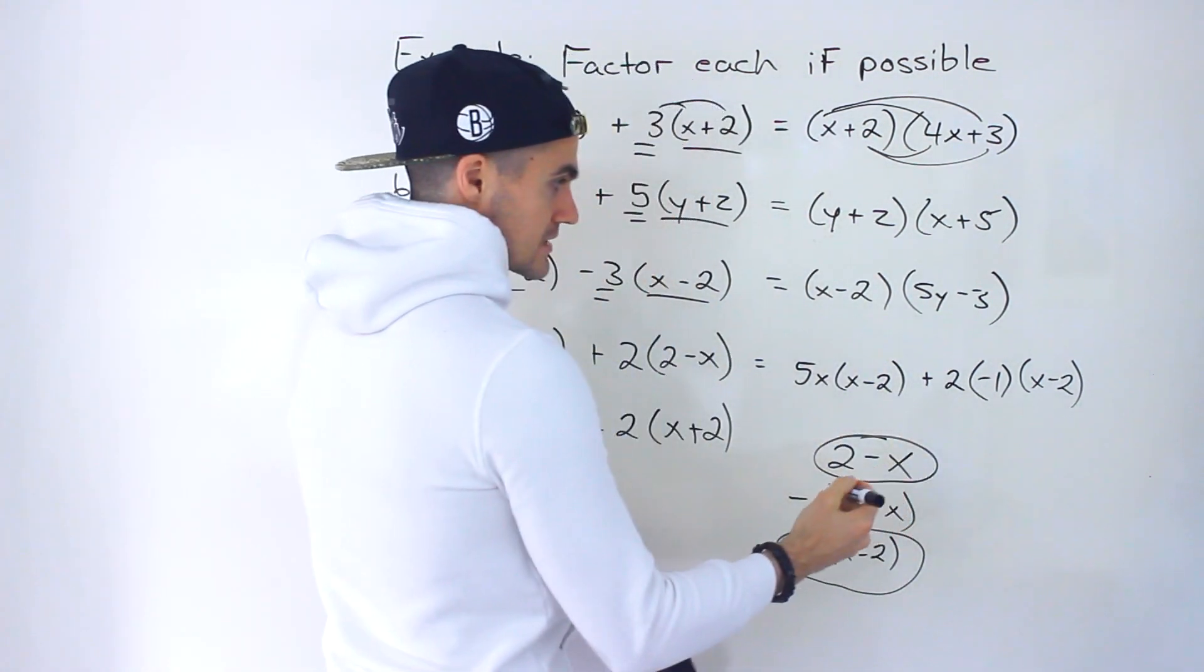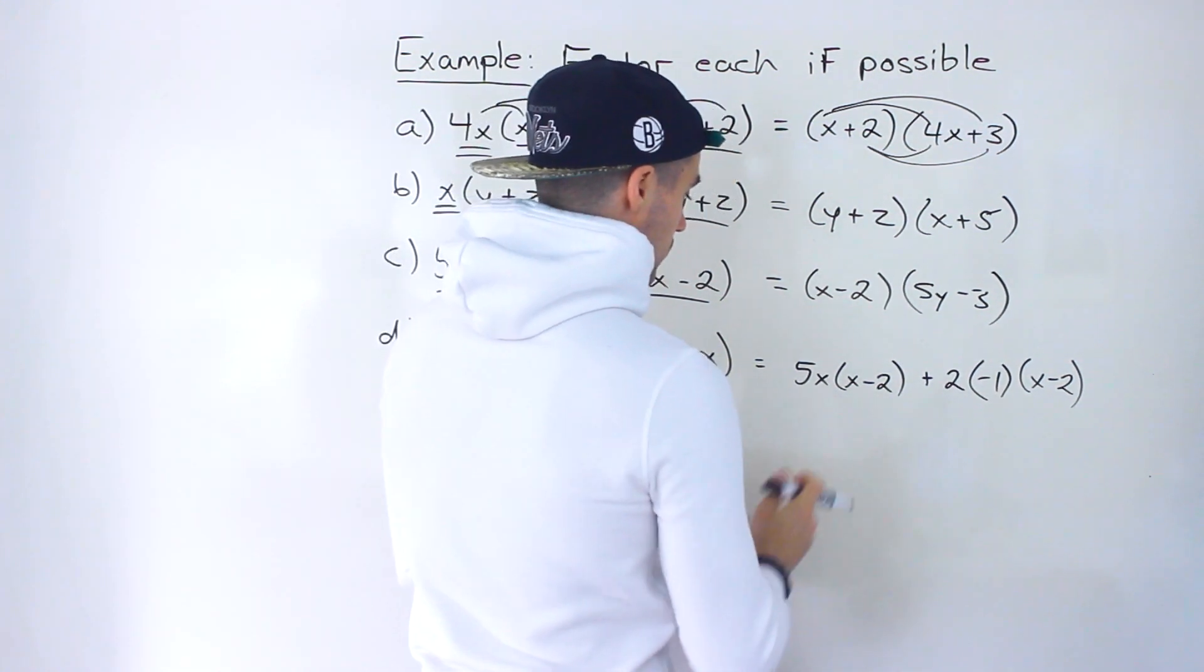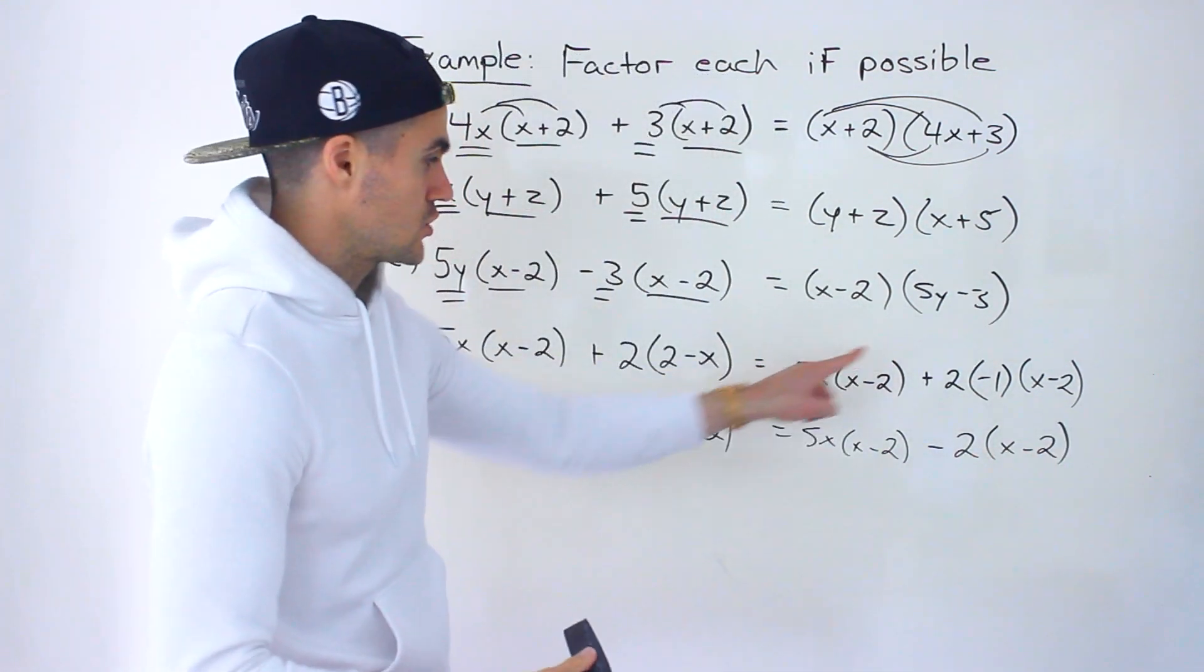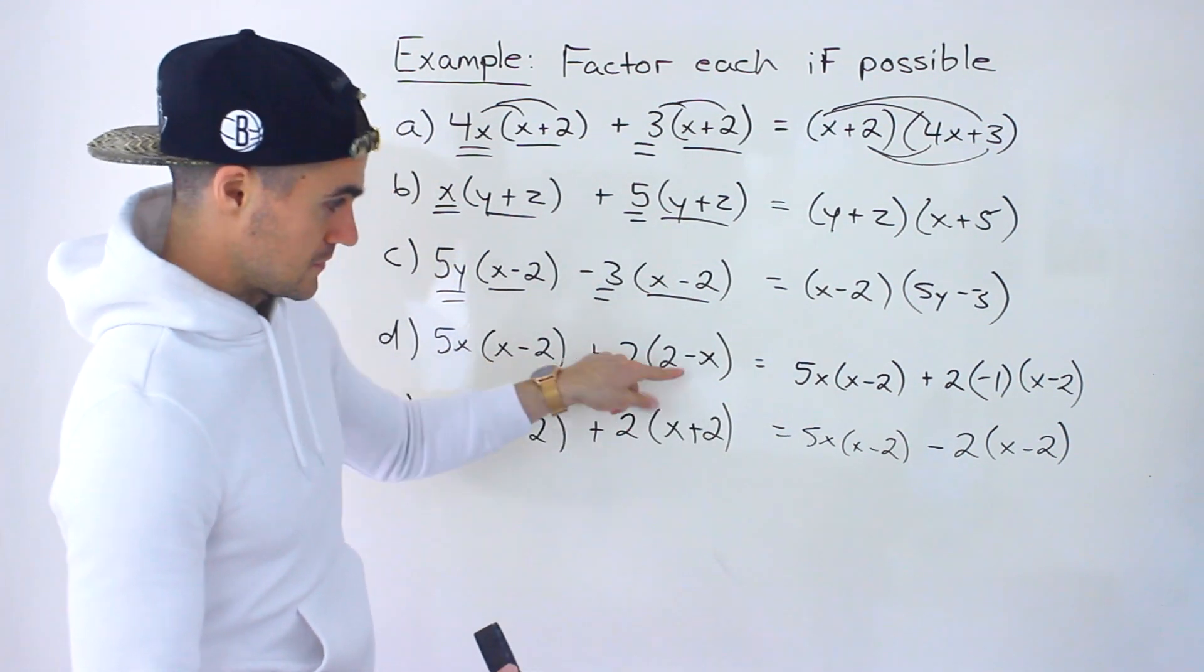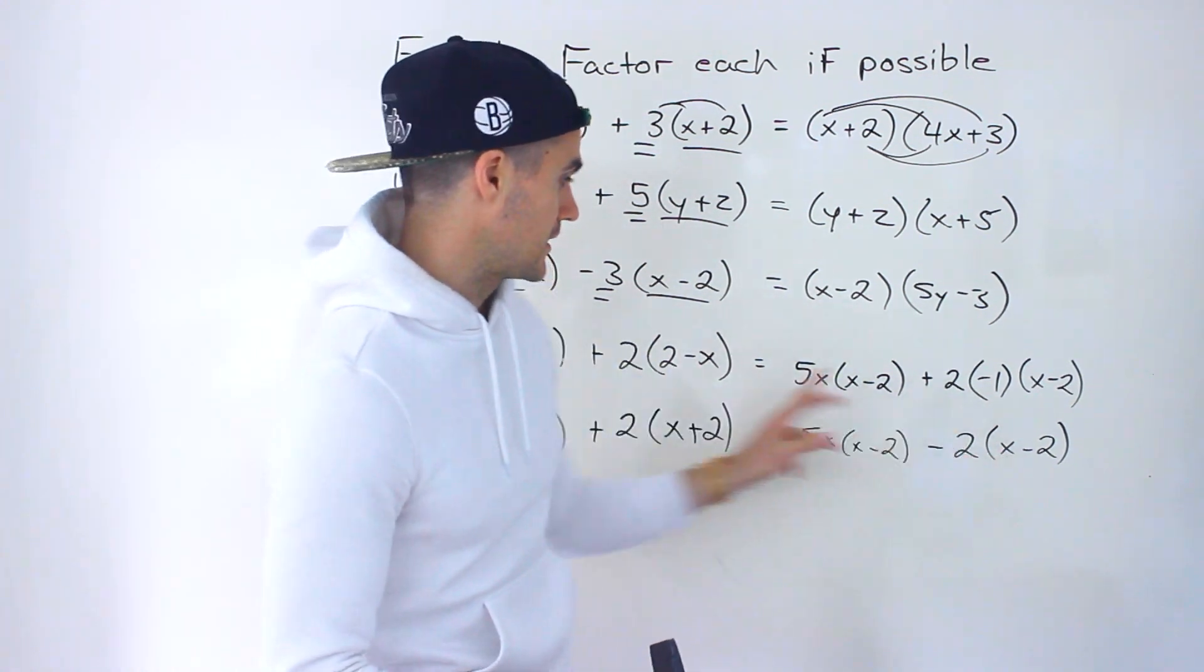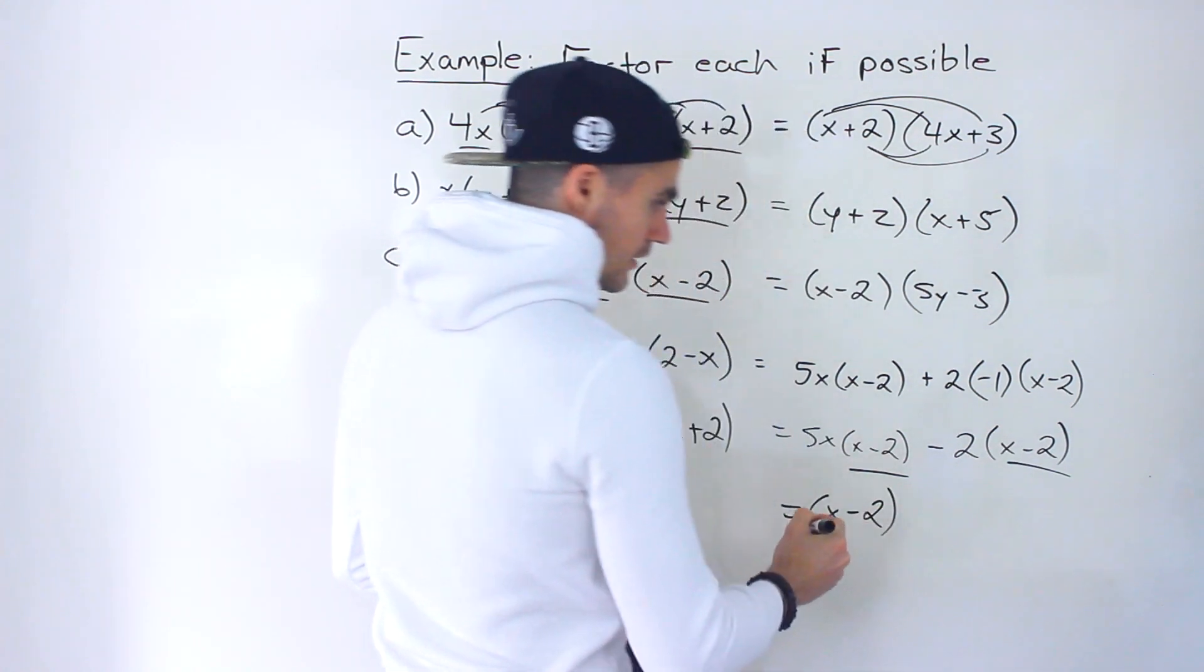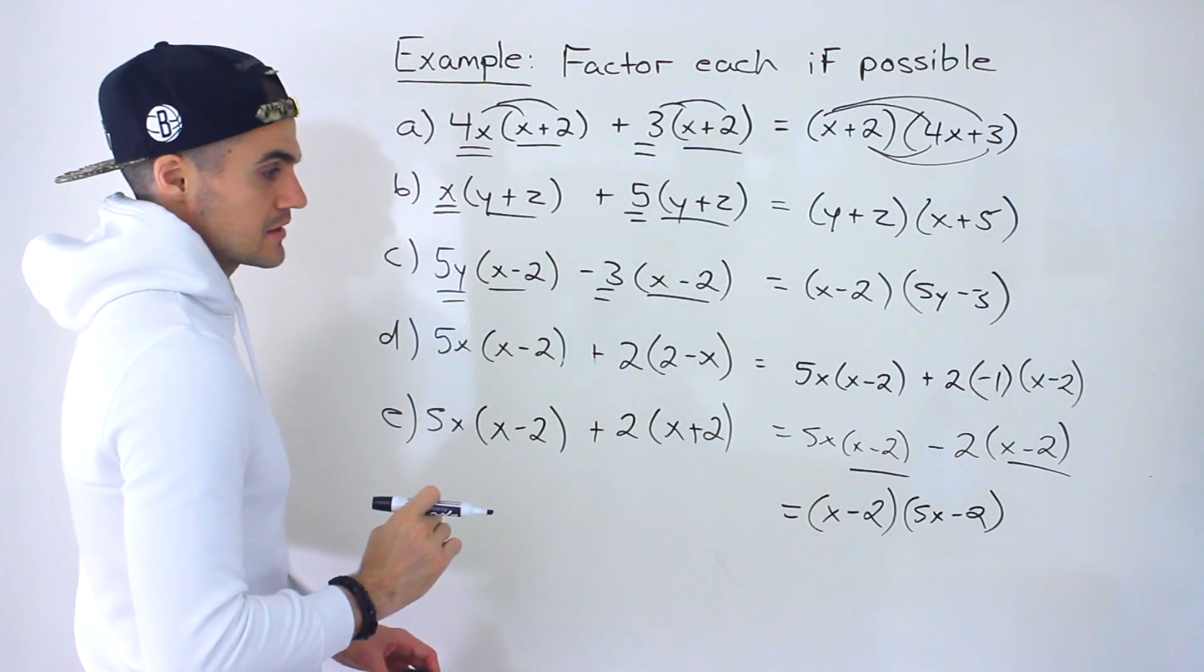So what we would do is we could rewrite this as plus 2 times this negative 1 here that's in front times x minus 2. This and this, they're the exact same thing. And then what you could do is you could take the negative 1 and multiply it by the 2. So you would end up with 5x times x minus 2 and then you'd have negative 2 times x minus 2. And usually this step isn't shown. Usually textbooks would show going from here to here. We're taking out a negative from this bracket. So this positive 2 becomes a negative 2. And then you're left with that x minus 2. Basically, both of those get flipped. And now notice we have a common binomial factor. We could take out the x minus 2 and we're left with 5x minus 2.